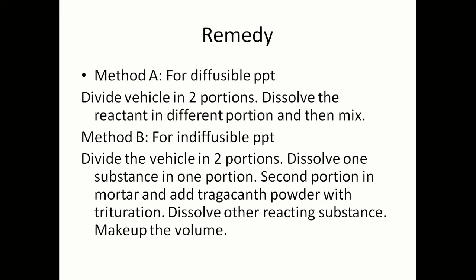When studying the remedies of chemical incompatibility, there are two methods: Method A and Method B. Method A is applicable for reactions causing diffusible precipitate. If there is a reaction causing precipitation, depending on what kind of precipitate is formed, you adopt the appropriate method as rectification. Method A is for diffusible precipitation. In Method A, you divide the vehicle into portions, dissolve one reactant in one portion, the other reactant in the other portion, and then mix the two portions.